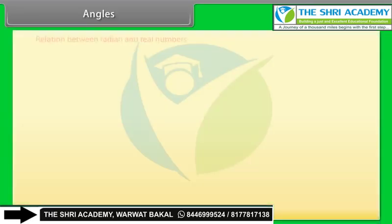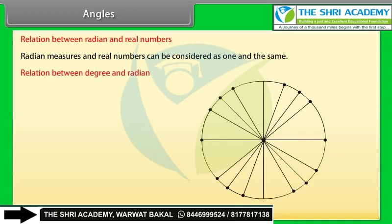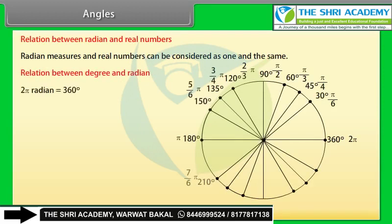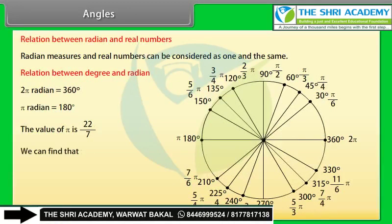Radian measures and real numbers can be considered one and the same. The relation between degree and radian: 2π radians equals 360 degrees; π radians equals 180 degrees. The value of π is 22/7. Therefore, 1 radian equals 57 degrees 16 minutes, and 1 degree equals 0.01746 radians.